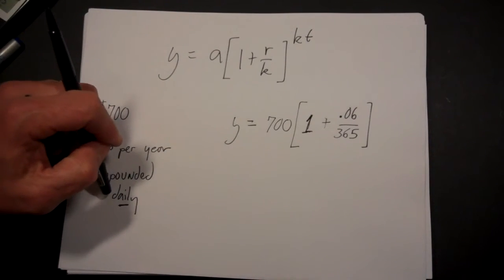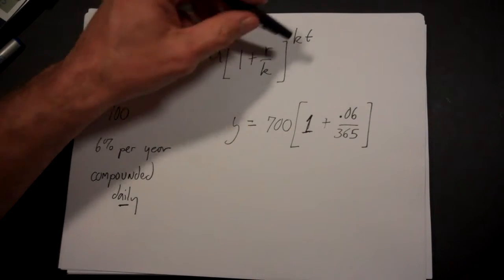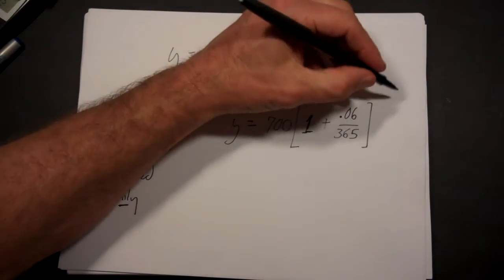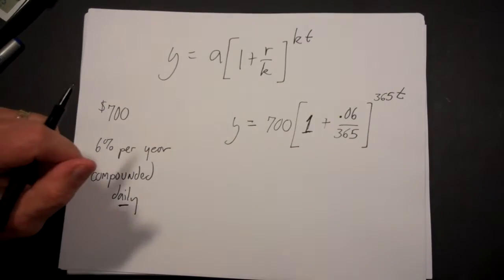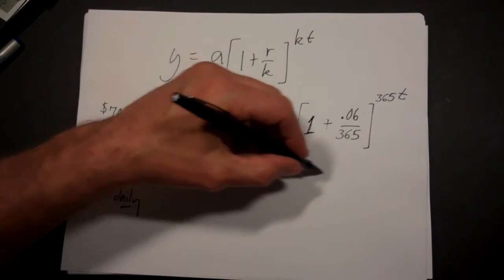365, and then we raise that to a power, and the power is 365, because that's k, times t, times the number of years. And that's going to be your overall formula.